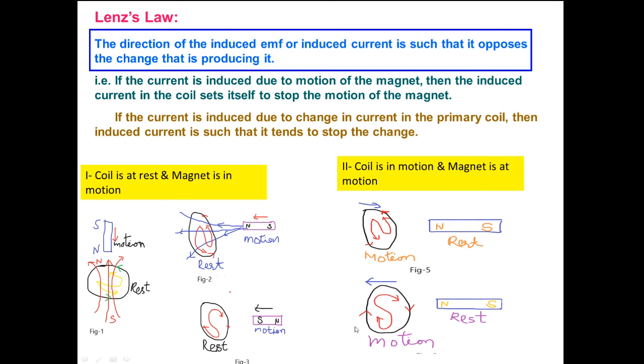We will take several examples, several ways that you can see in the diagram. In short we can say the statement of Lenz's law as: the direction of the induced EMF or induced current is such that it opposes the change that is producing it. How induced current can be produced? In Faraday's experiment we have seen due to relative motion.